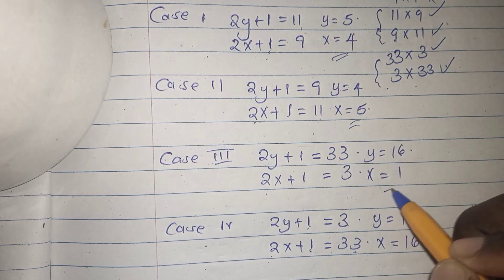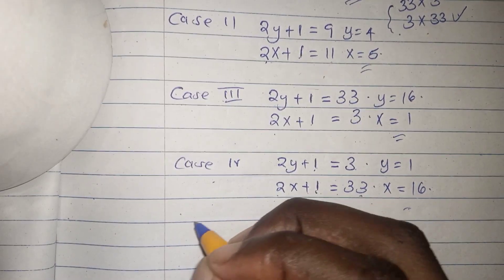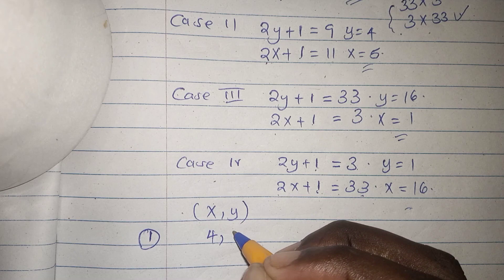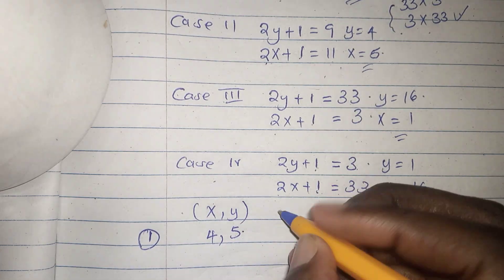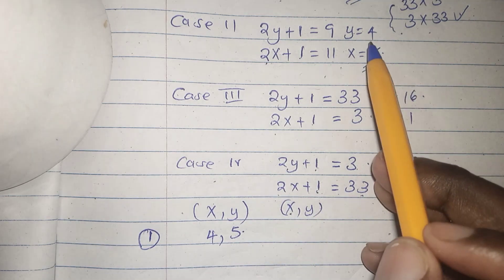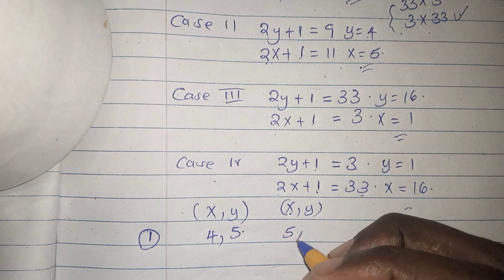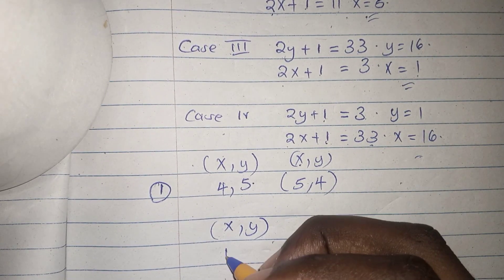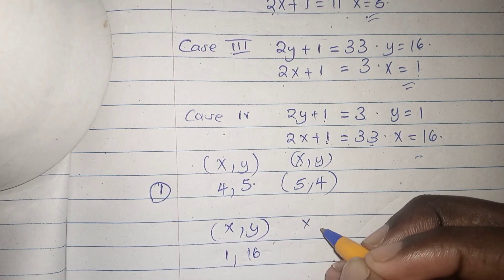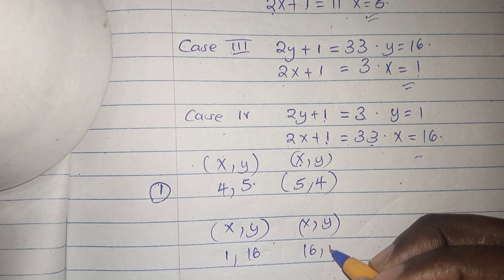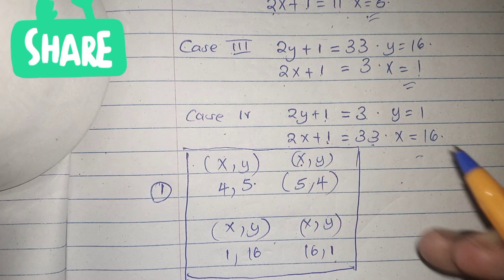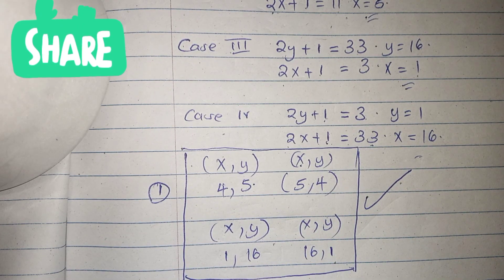We have four sets of solutions for (x, y): the first is (4, 5), the second is (5, 4), the third is (1, 16), and the fourth is (16, 1). These are all our solutions. Remember to like, subscribe, and comment below — tell me if there's another method to solve this. Kindly share with your learning friends. Bye, see you in my next video!